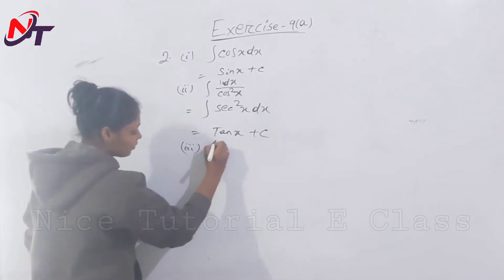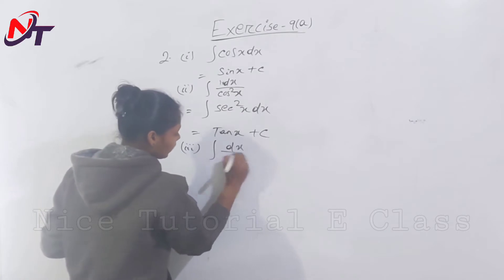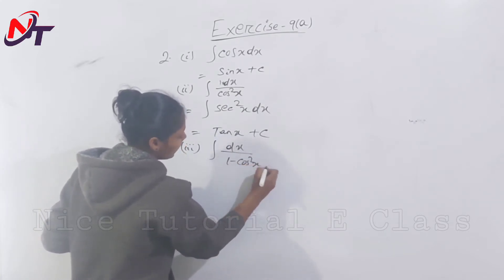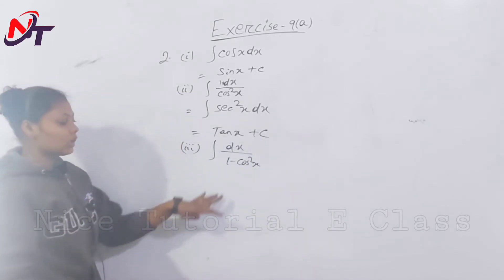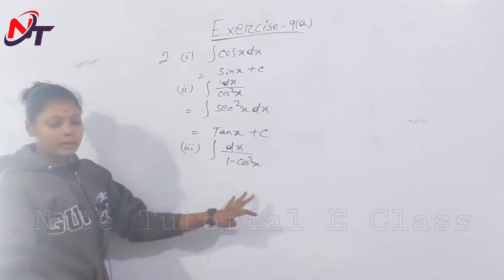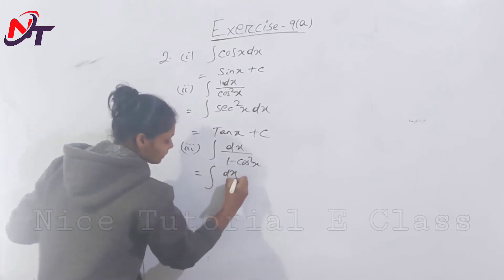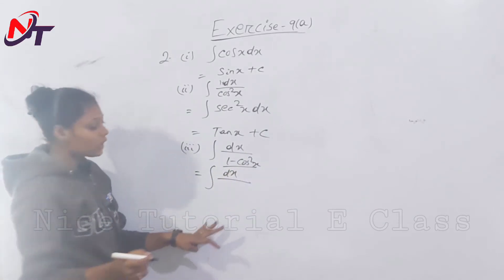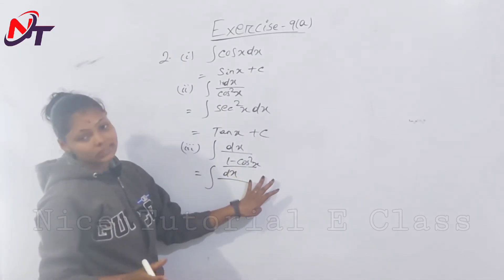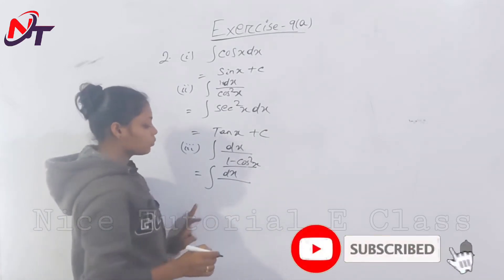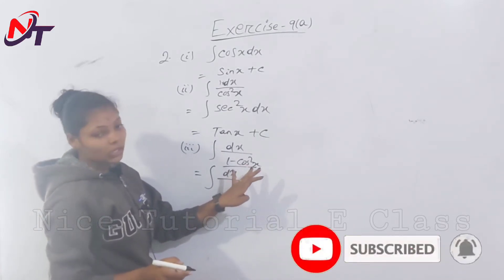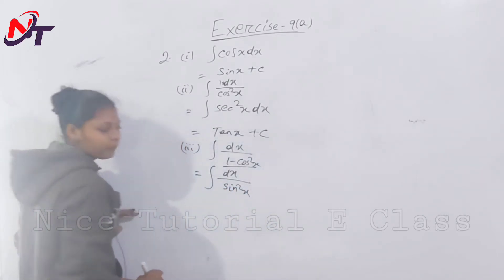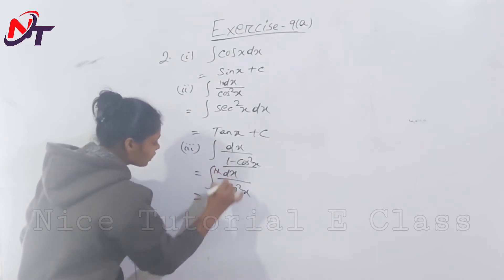Question number 3: integration of dx divided by 1 minus cos square x. Now, 1 minus cos square x equals sin square x, so we have integration of 1 by sin square x dx.